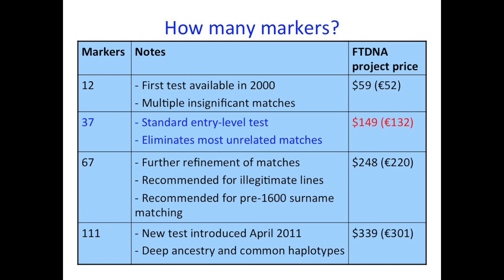The standard entry level test is now the 37 marker test, which I recommend you start with. You can upgrade later to 67 or 111 markers at no extra expense — it's not always necessary, but if you're trying to explore an illegitimate line, I would always recommend at least 67 markers, because when looking at matches with other surnames you need that extra confidence from the additional markers.